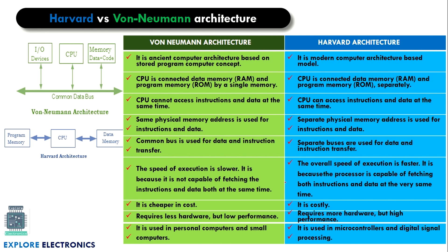Now let us look at Harvard and von Neumann architectures, which were mentioned when comparing microprocessors and microcontrollers. In von Neumann architecture, there is a common bus shared between I/O devices, the CPU, code memory, and data memory. In Harvard architecture, there are separate buses: one between program memory and the CPU, and another between the CPU and data memory. So Harvard architecture uses multiple buses, while von Neumann uses a single common bus.